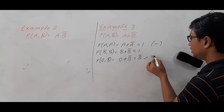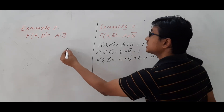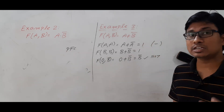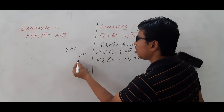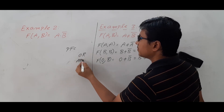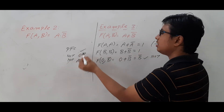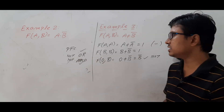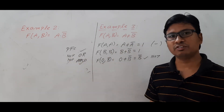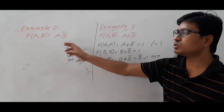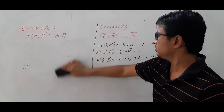Now I try f(0, b): putting 0 in place of a and keeping b as b. I get 0 OR b-complement, which equals b-complement. So I got NOT, but with the support of constant 0. Therefore, the maximum I can say is that it is partially functionally complete. To confirm partial completeness, I also need to verify I can produce either OR or AND, because with {OR, NOT} I can construct any function.